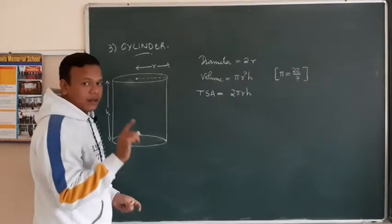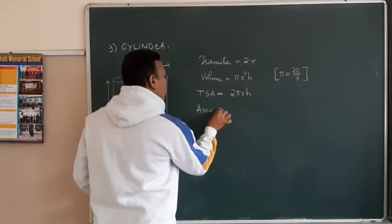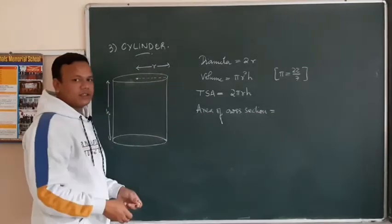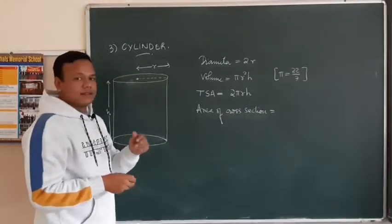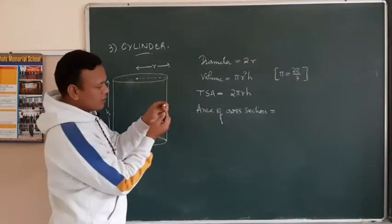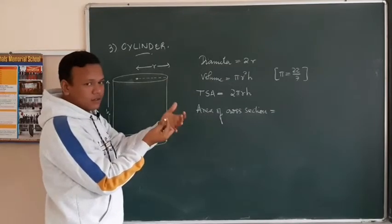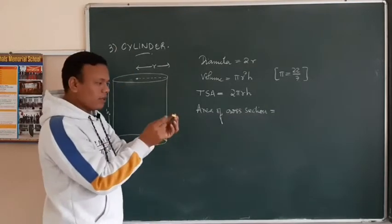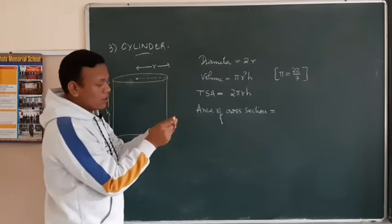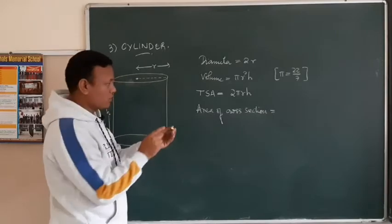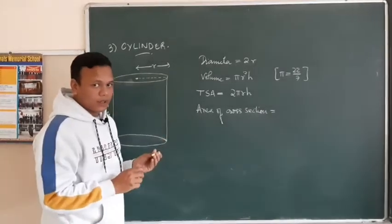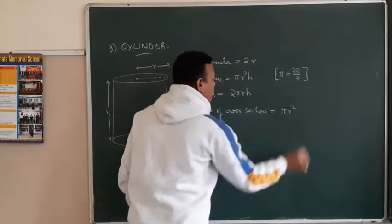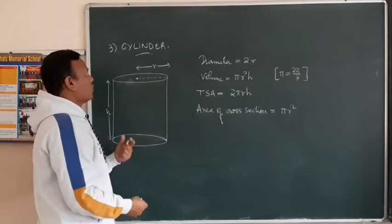There is also something called area of cross section. Let us understand what cross section means. If you cut a cylinder, you see a circular shape. You can take any cylindrical object and look at the base — if you cut the cylinder, you will see the same circular shape again. This circular shape is known as the cross section. So the area of cross section means it is the area of a circle, which is given by πR².